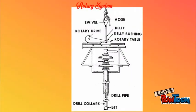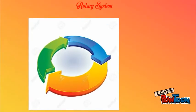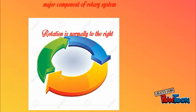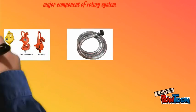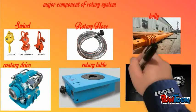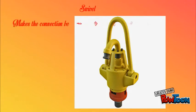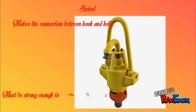The function of the rotary system is to transmit rotation to the drill string and rotate the bit. During drilling operation, this rotation is to the right. The main parts of the rotary system are swivel, rotary hose, Kelly, rotary drive, rotary table and drill string. The swivel establishes a connection between the hook and Kelly. Thus, the swivel has to be constructed extremely robust since it has to carry the total drill string weight and at the same time provide a high pressure seal.